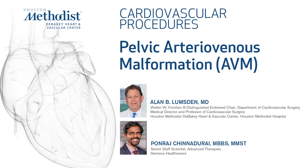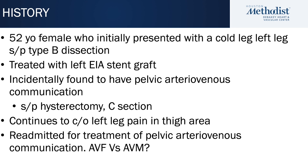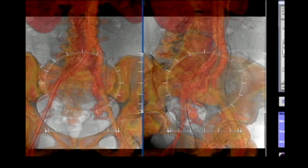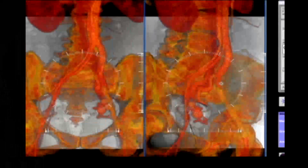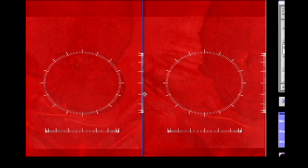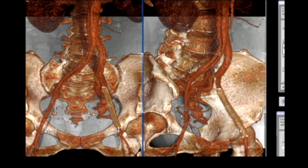An interesting case of a 52-year-old female who initially presented with a type B dissection and was found to have a cold left leg. That was treated with a left iliac stent graft, which she did very well. However, at the time of the initial dissection, she was found to have a large pelvic arteriovenous communication. This was completely incidental.